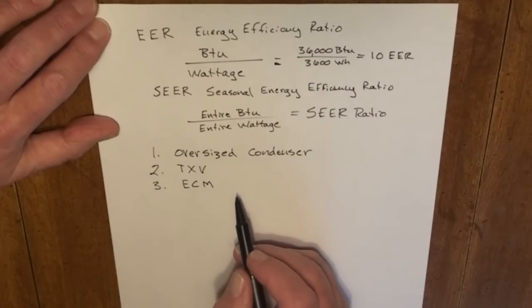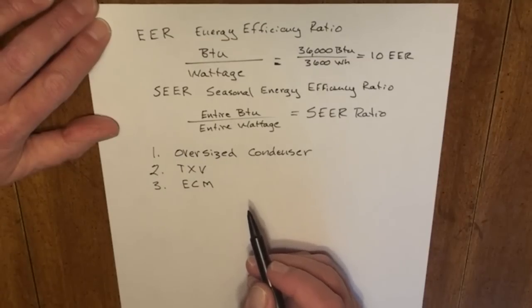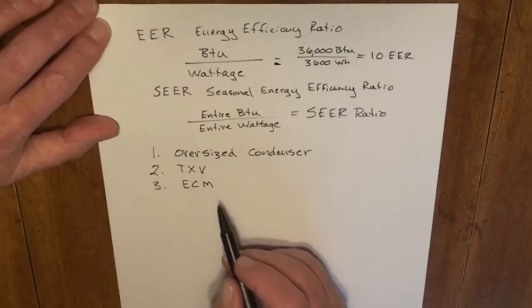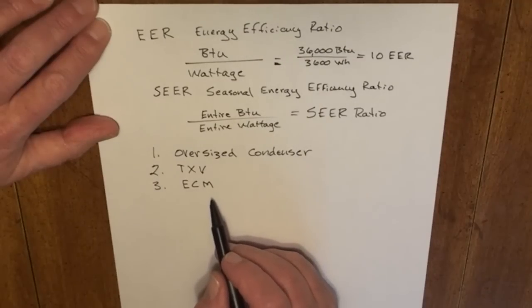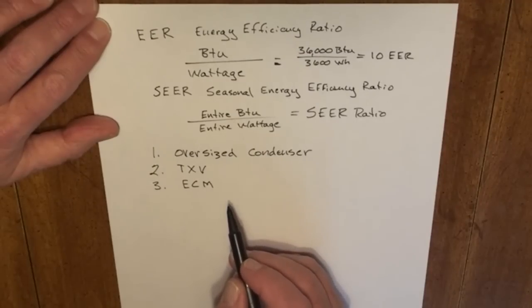It makes it more efficient because if you don't need, say, two amps of airflow within your house to achieve our 450 CFM per ton, this can adjust for it. Another thing about the ECM motor is it can give us greater control over humidity within the structure.